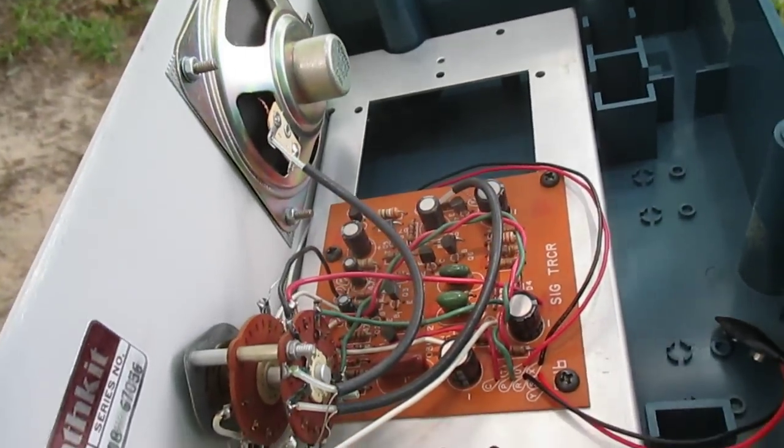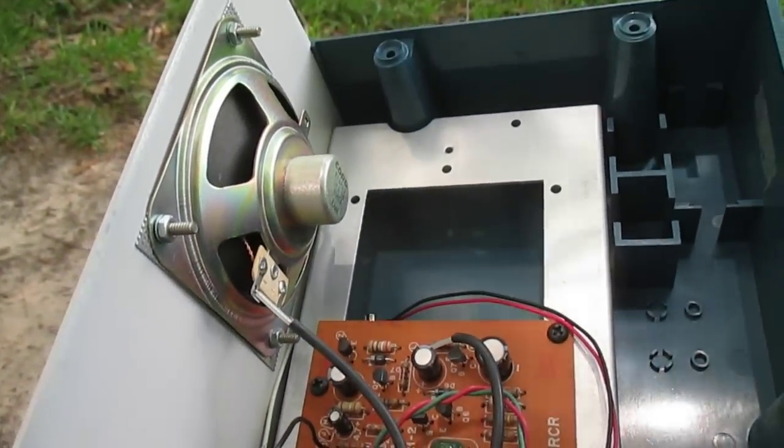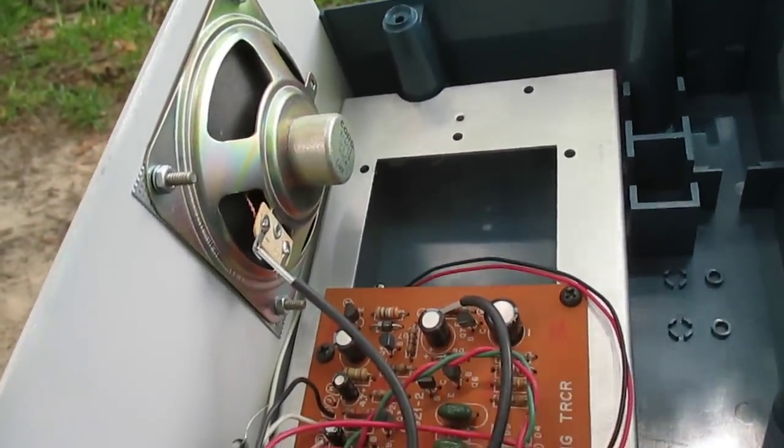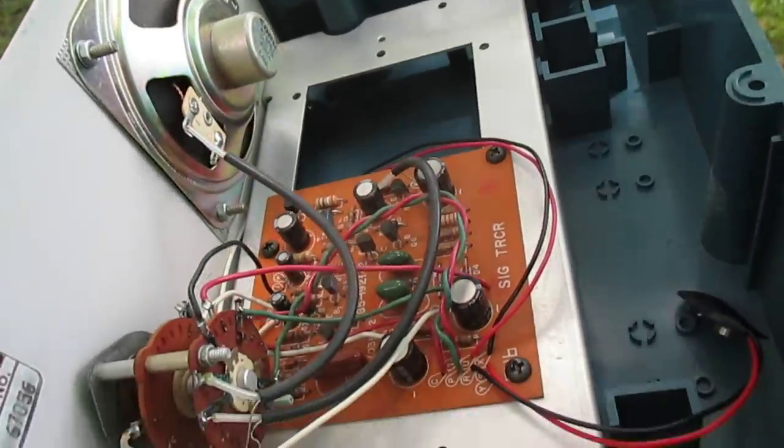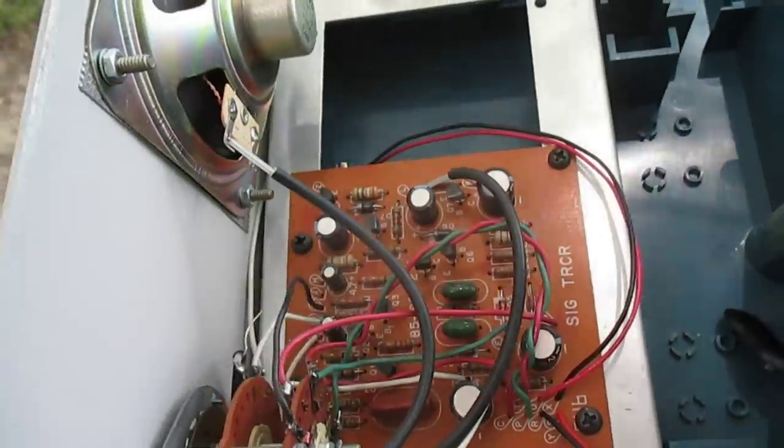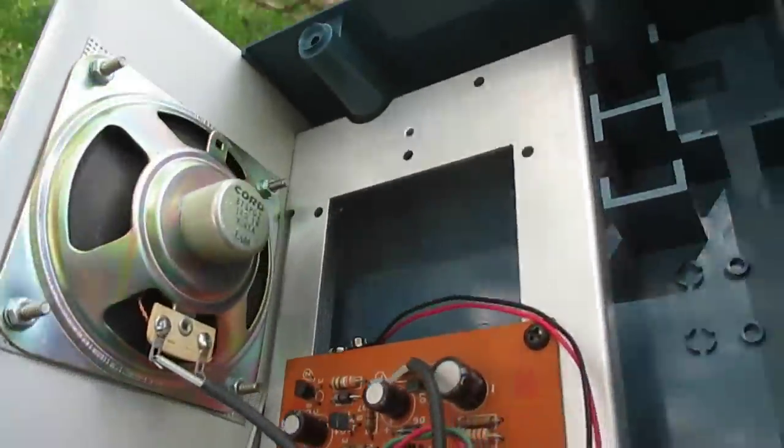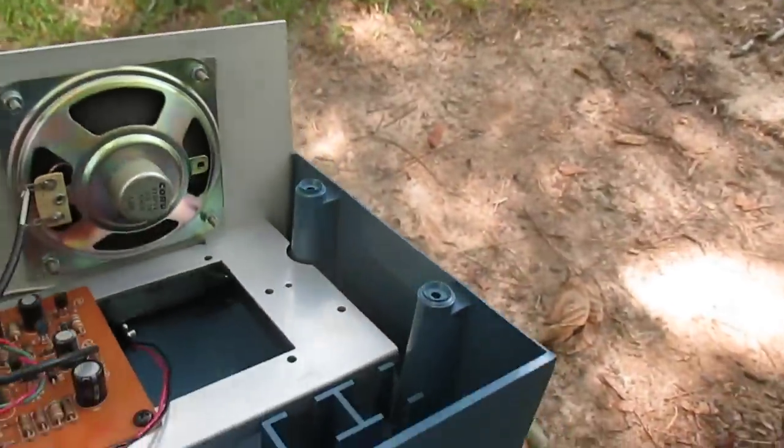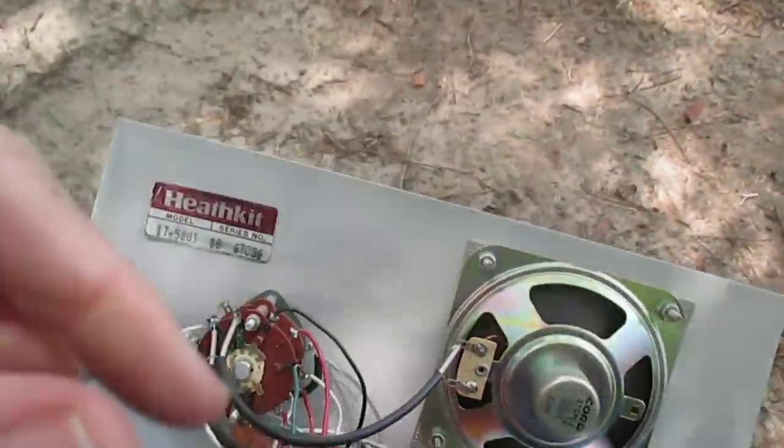Here's the inside of the signal tracer and as the brand implies, Heathkit, this was built as a kit. As you can tell really not much to this. We run off a couple of nine volt batteries.